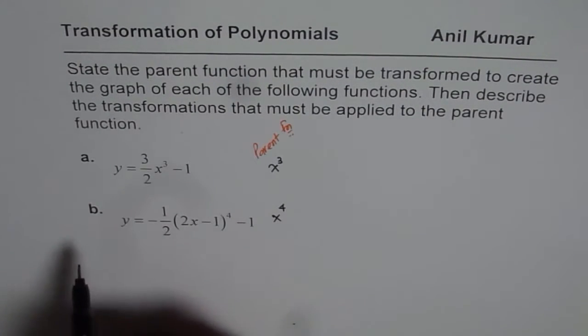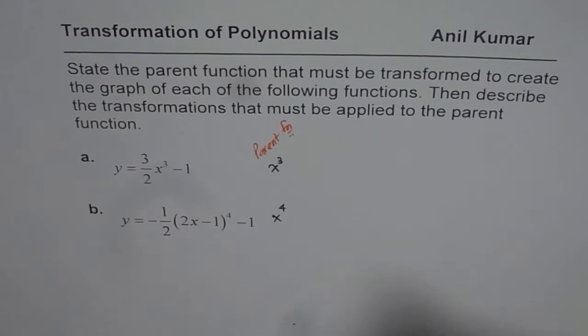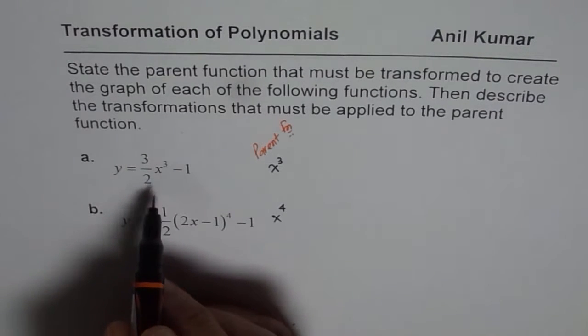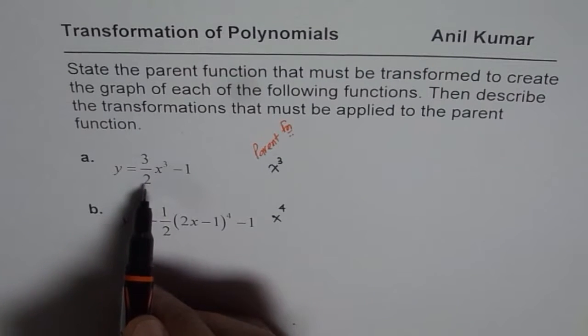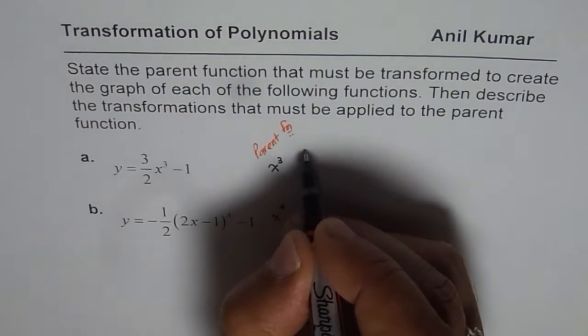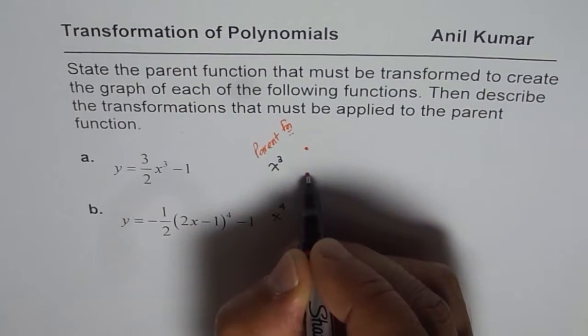And now we'll describe the transformations. For part a, there are two transformations. One is vertical stretch. Since 3 over 2 is 1.5, greater than 1, the first one here is